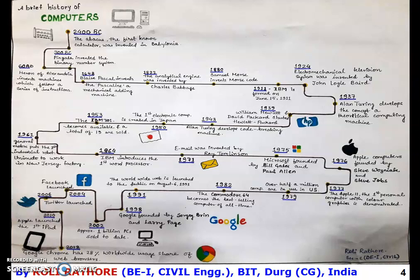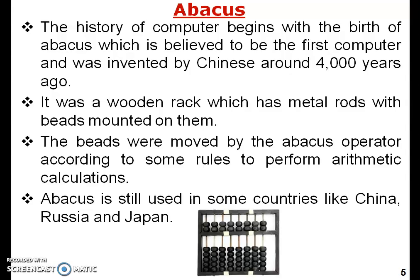You can see the different types of software that have been developed: for example, Facebook in 2004, Twitter in 2006, emails, and how Google came into existence. Apple computers were developed in 1976. This diagram shows both the hardware and software progression, with the first machine being the abacus.